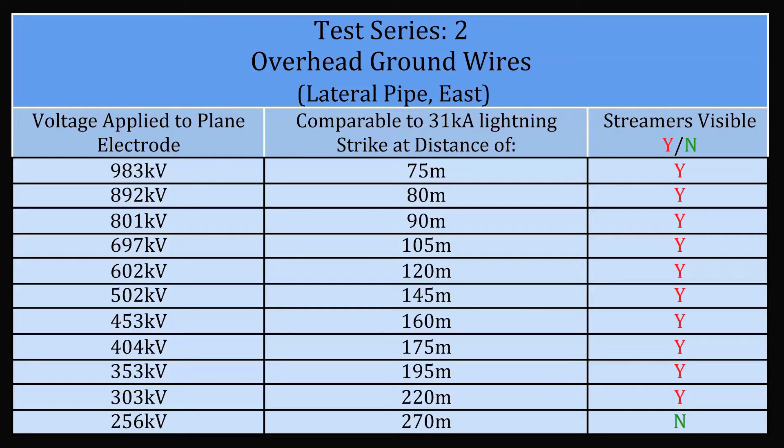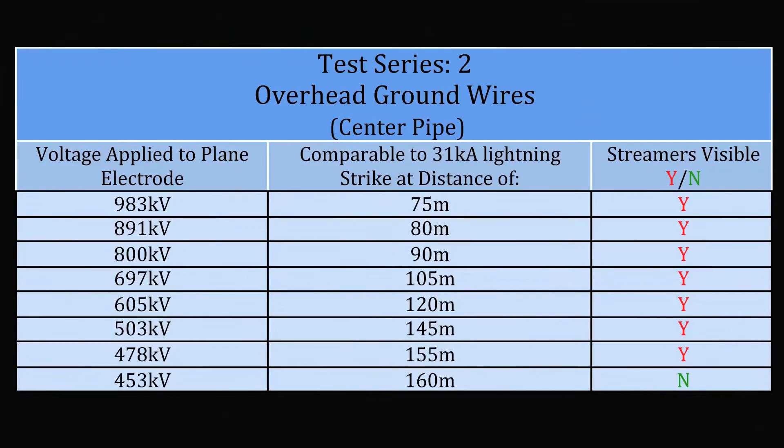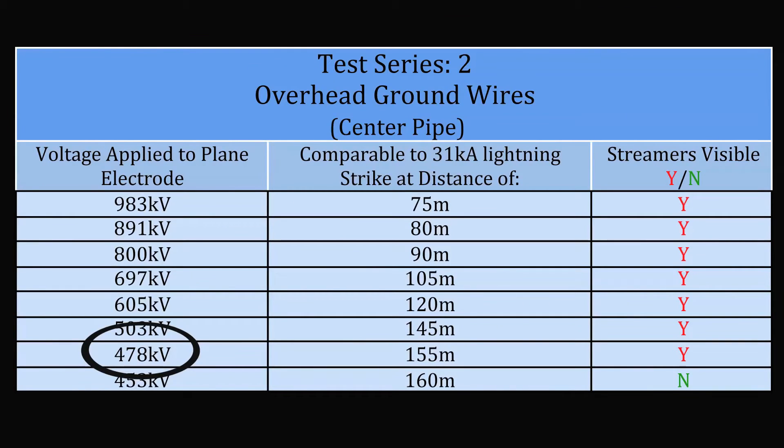However, there was still no significant improvement in performance as sparking continued down to applied voltages ranging between 303 and 478 kilovolts.